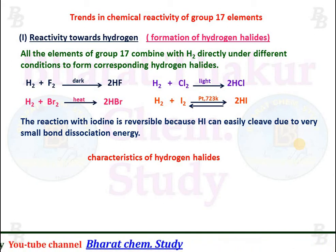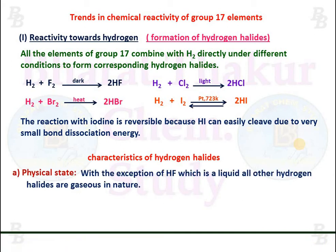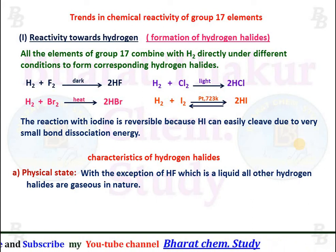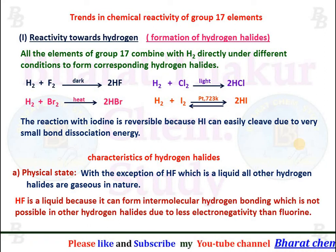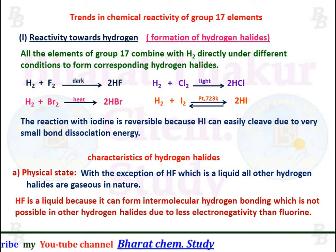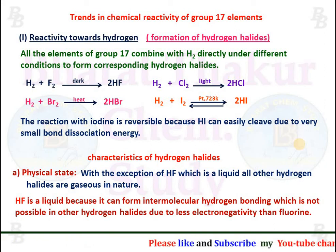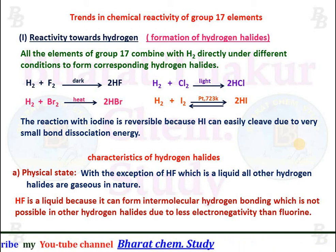Characteristics of hydrogen halides. Physical state: with the exception of HF, which is a liquid, all other hydrogen halides are gases in nature. HF is a liquid because it can form intermolecular hydrogen bonding, which is not possible in other hydrogen halides due to lower electronegativity than fluorine. Therefore HF exists as a liquid.